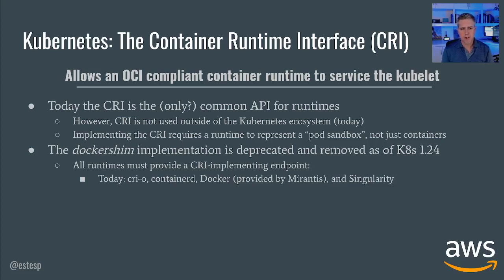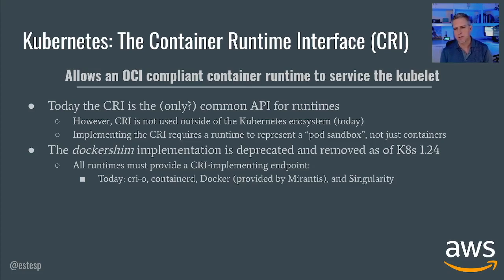What you have left is the container runtime interface — created several years ago as a common interface so that any compliant container runtime could service the kubelet. The CRI is really the only common API for runtimes we have today. Docker had an API; Containerd, the project I'm a maintainer of, has a Go API as well as a gRPC API; Crio, Podman, Singularity — there are many other runtimes across the ecosystem. But CRI is really providing a common API, although truly it's not really used outside of the Kubernetes ecosystem today. CRI tends to pair with other interfaces like CNI for networking and CSI for storage.